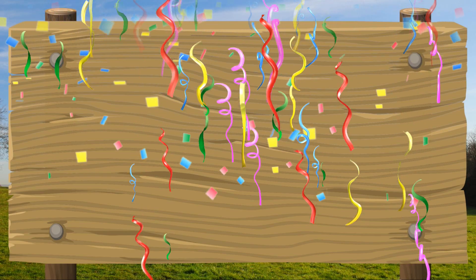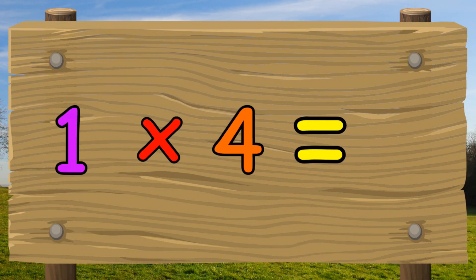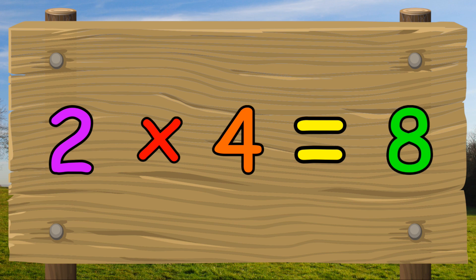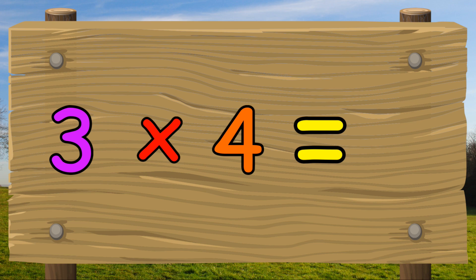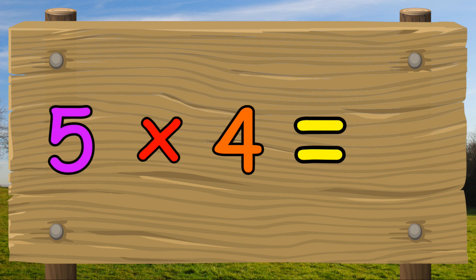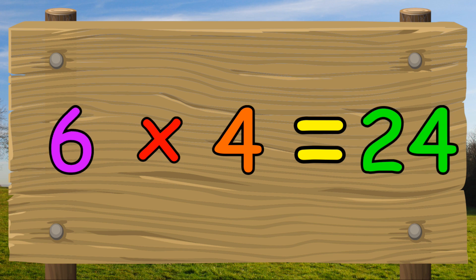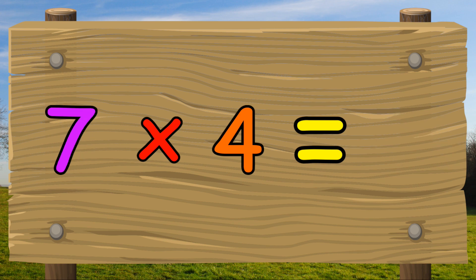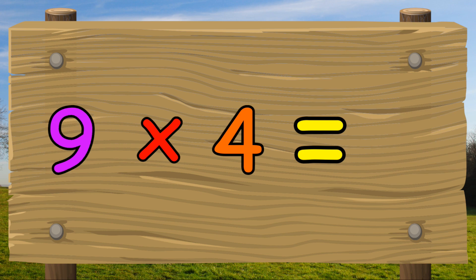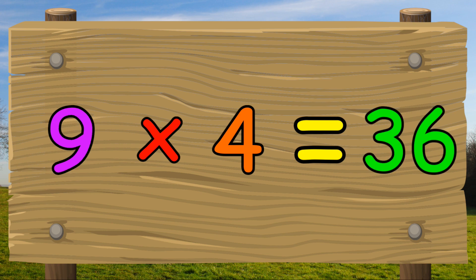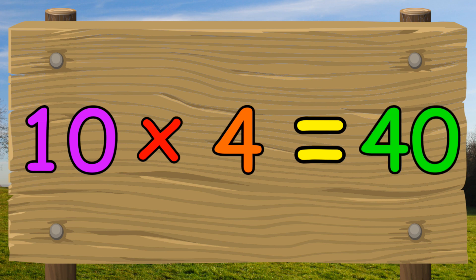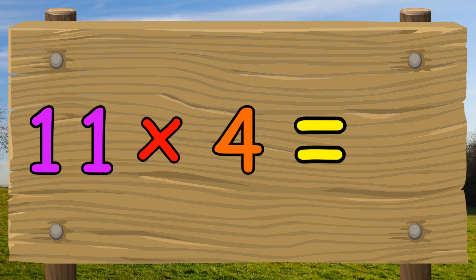Great, let's try the four times table one more time. One times four equals four. Two times four equals eight. Three times four equals twelve. Four times four equals sixteen. Five times four equals twenty. Six times four equals twenty-four. Seven times four equals twenty-eight. Eight times four equals thirty-two. Nine times four equals thirty-six. Ten times four equals forty. Eleven times four equals forty-four.